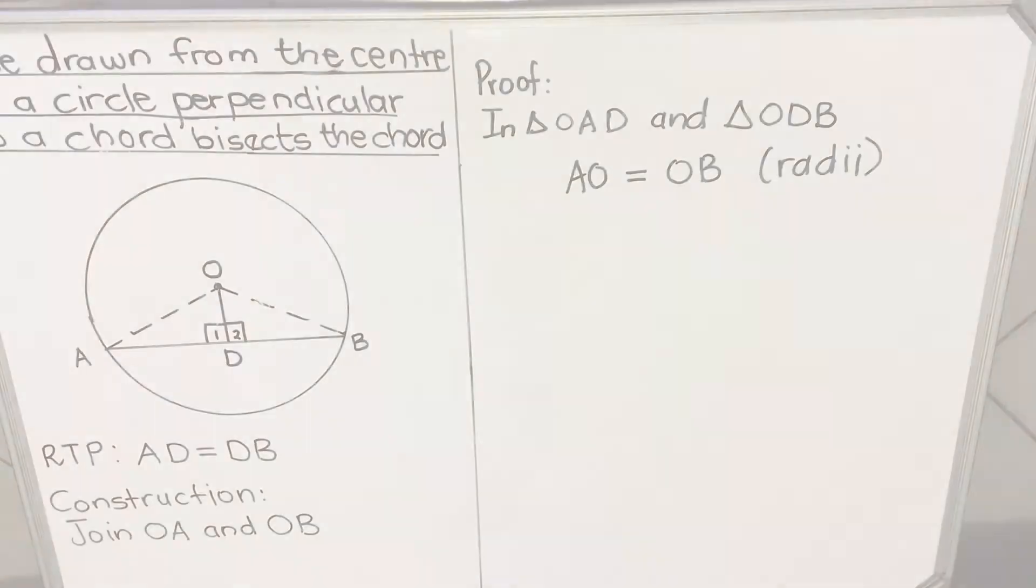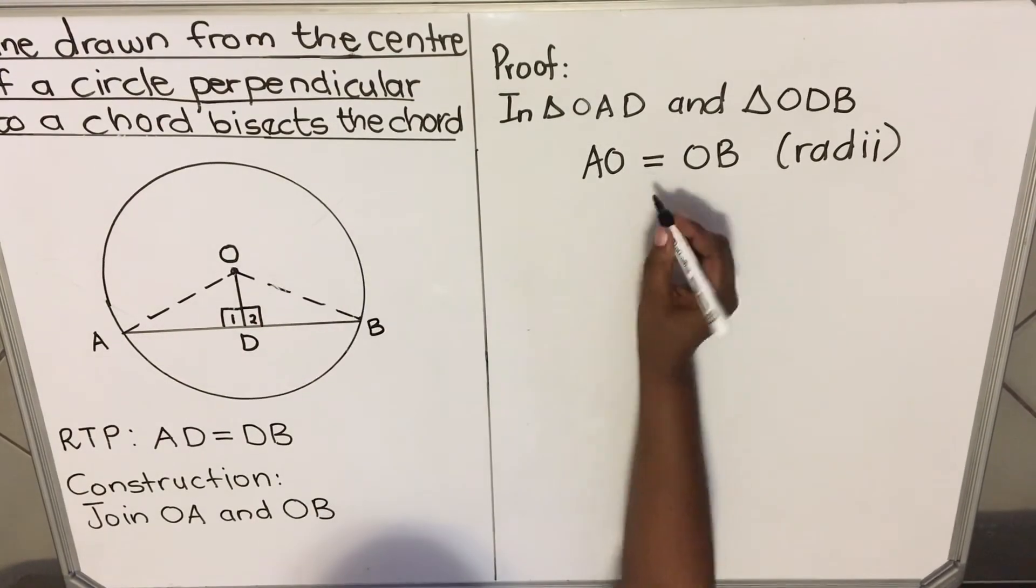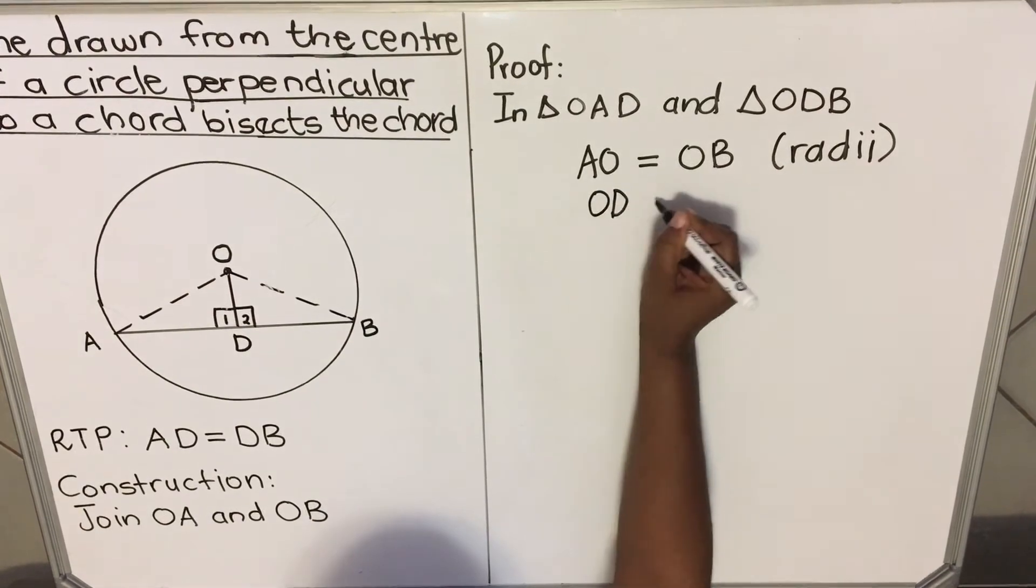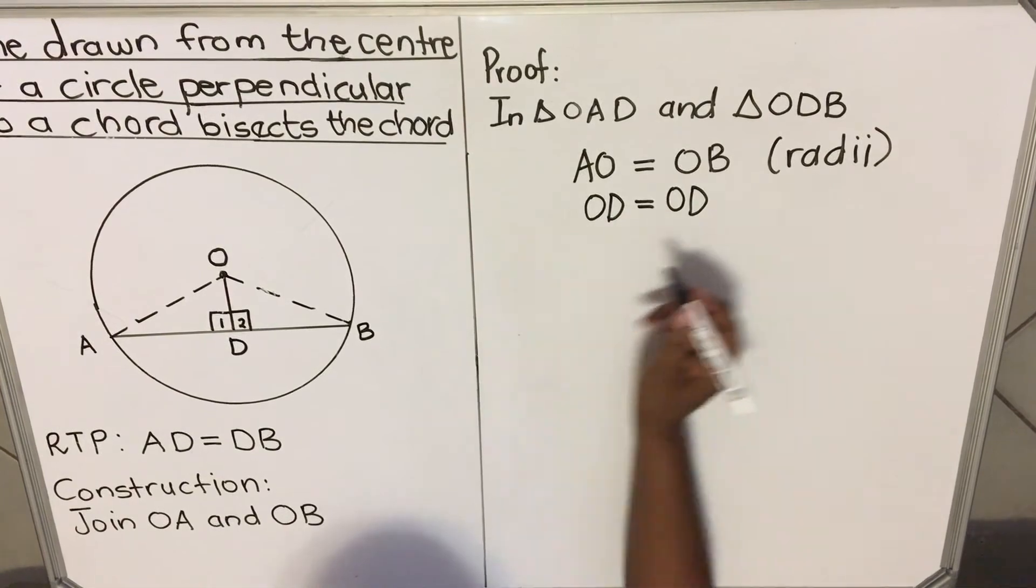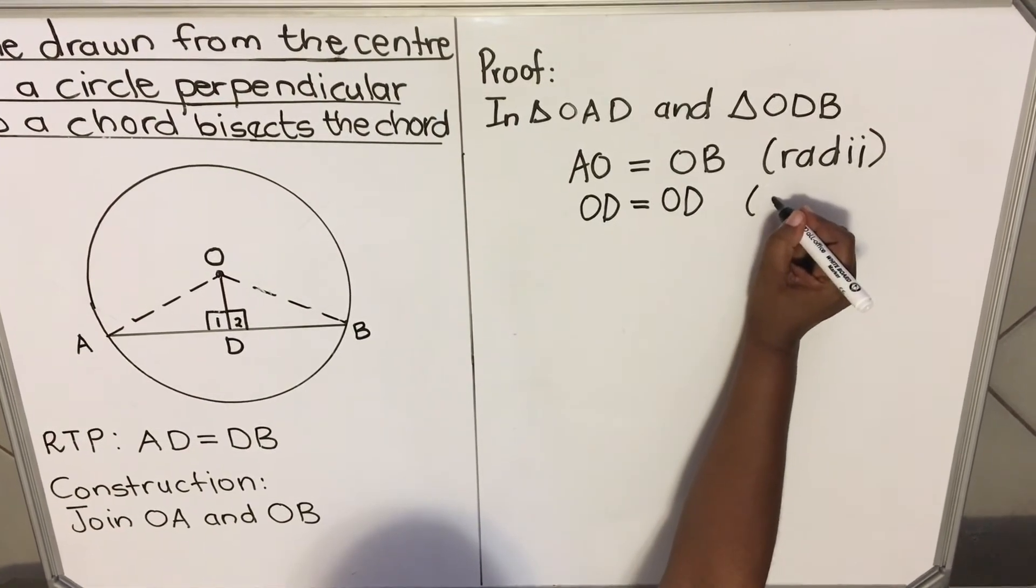This line OD. The line OD is equal to line OD. Both triangles have the same line. So we say common side.